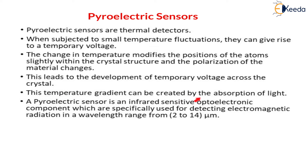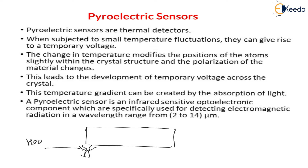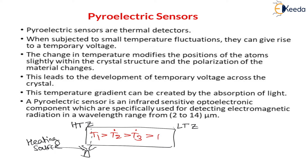This temperature gradient can be created by absorption of light. Temperature gradient is the change in temperature with respect to distance. For example, if I am heating from one side, that zone will be the high temperature zone and the other will be the low temperature zone. As location changes, temperature changes — say T1 > T2 > T3 > T4 at successive locations. This change in temperature with location is called the temperature gradient.